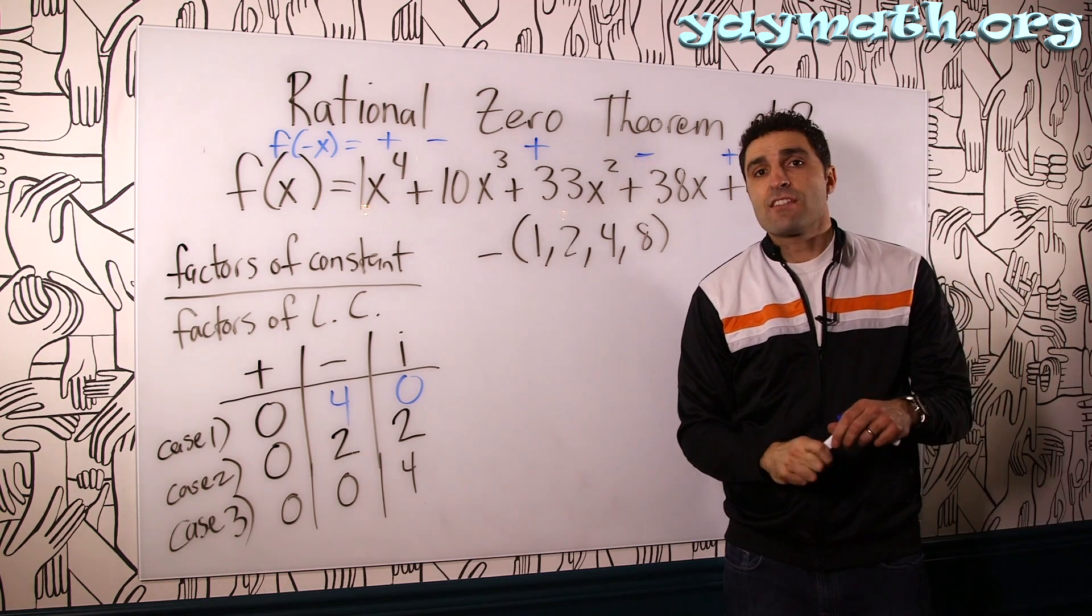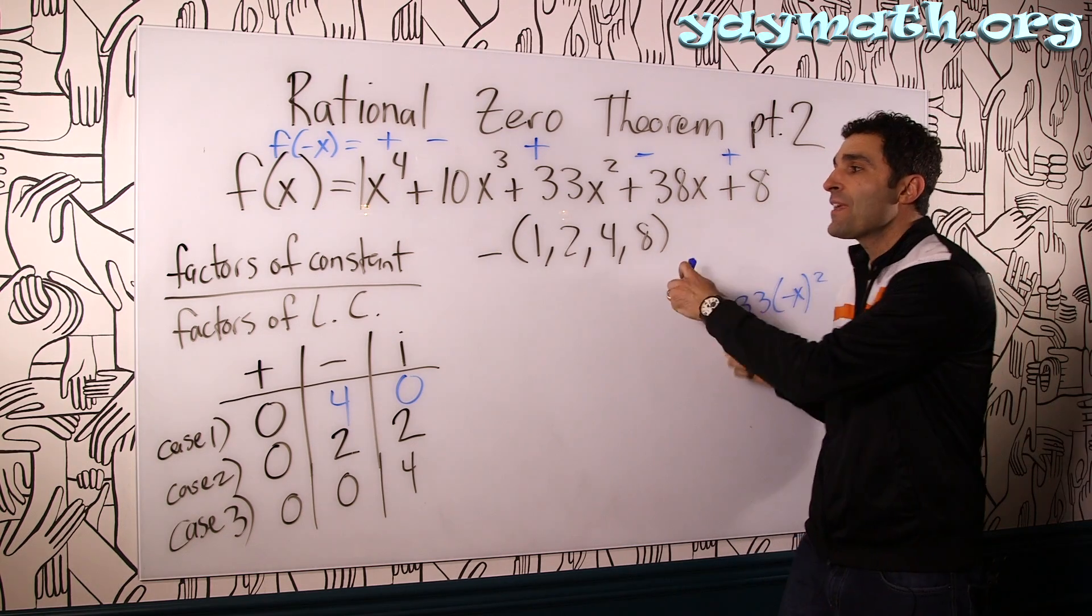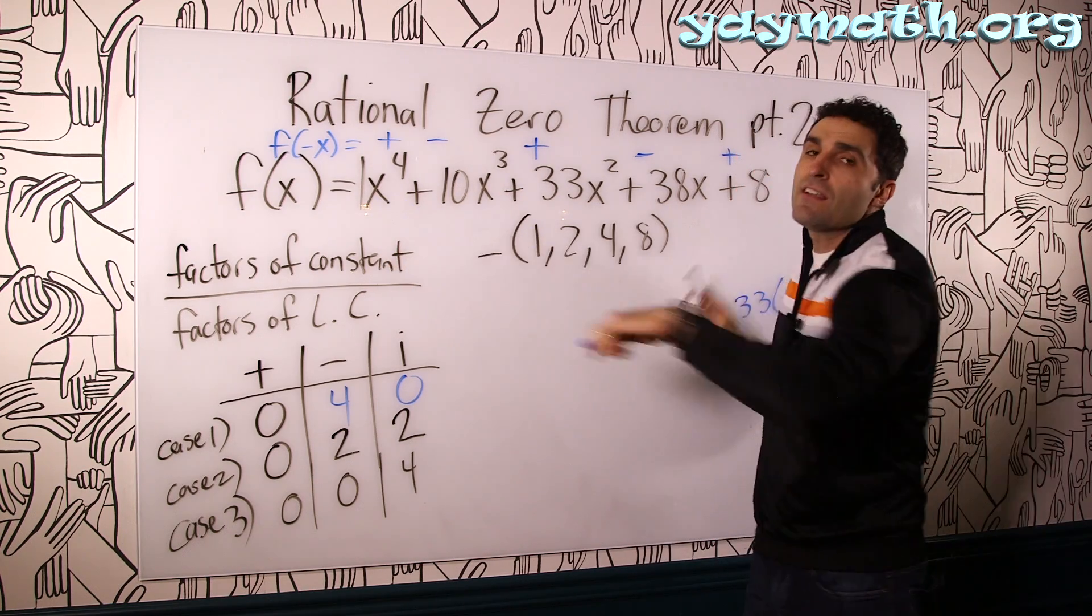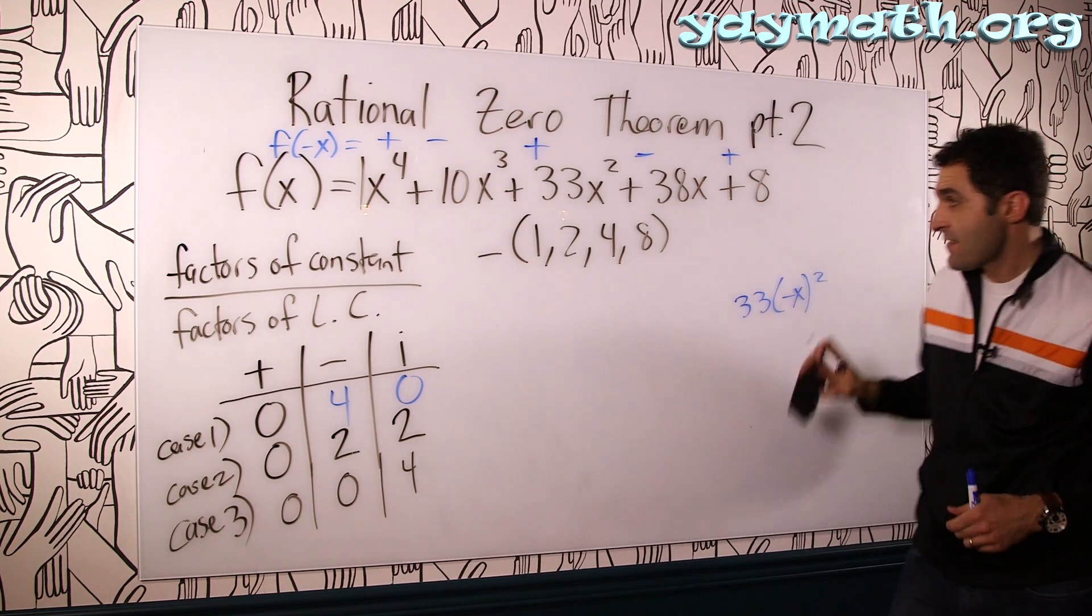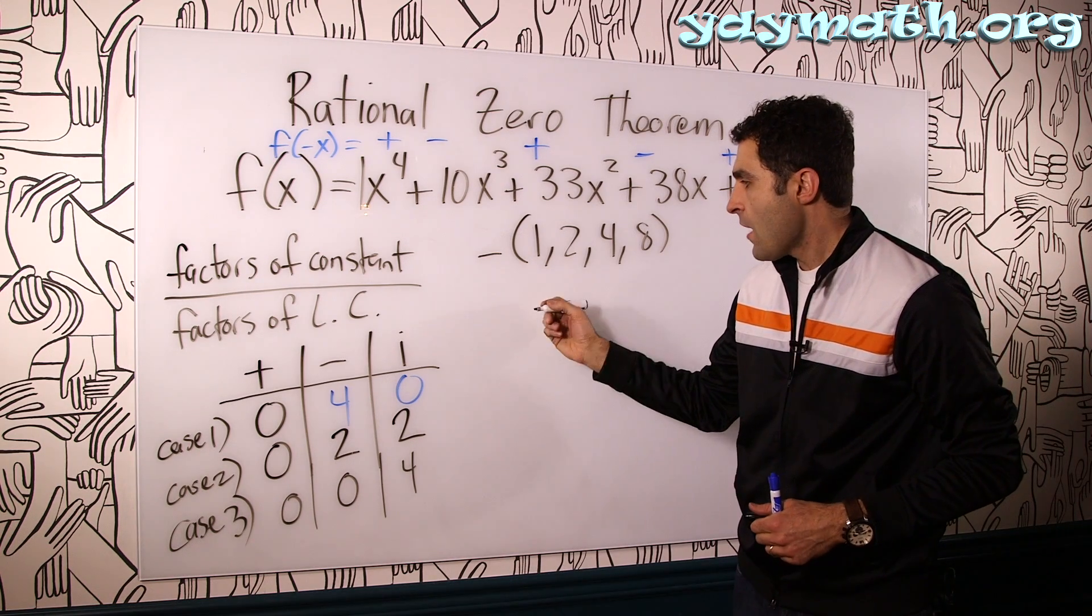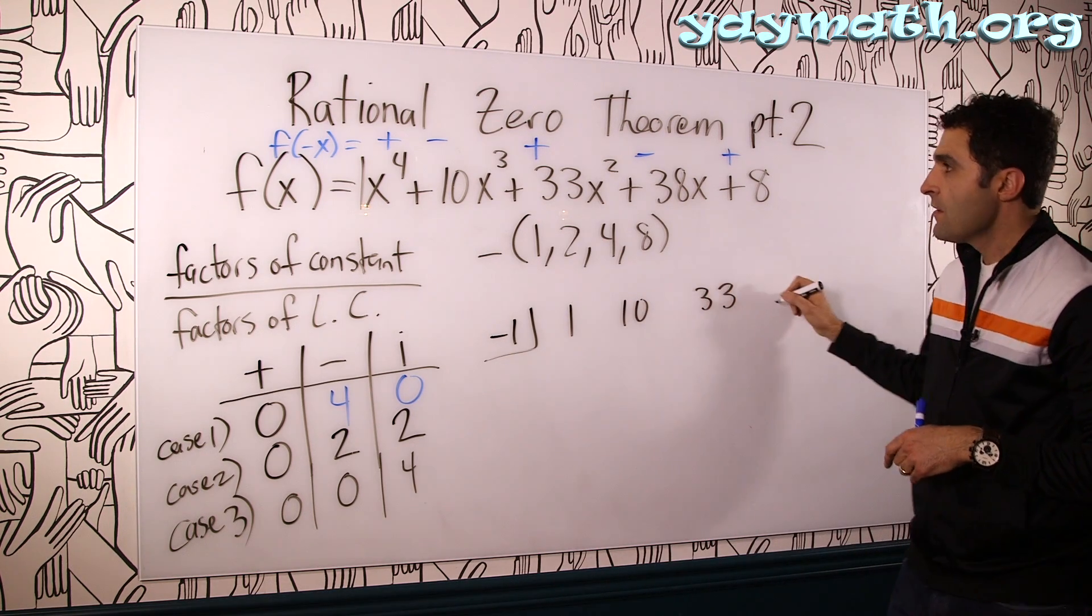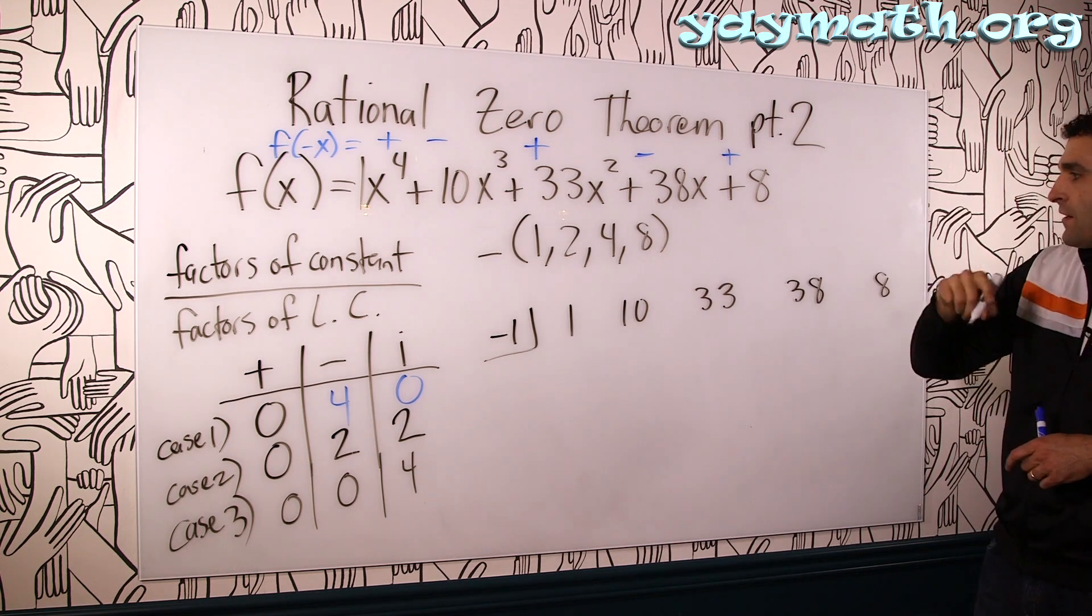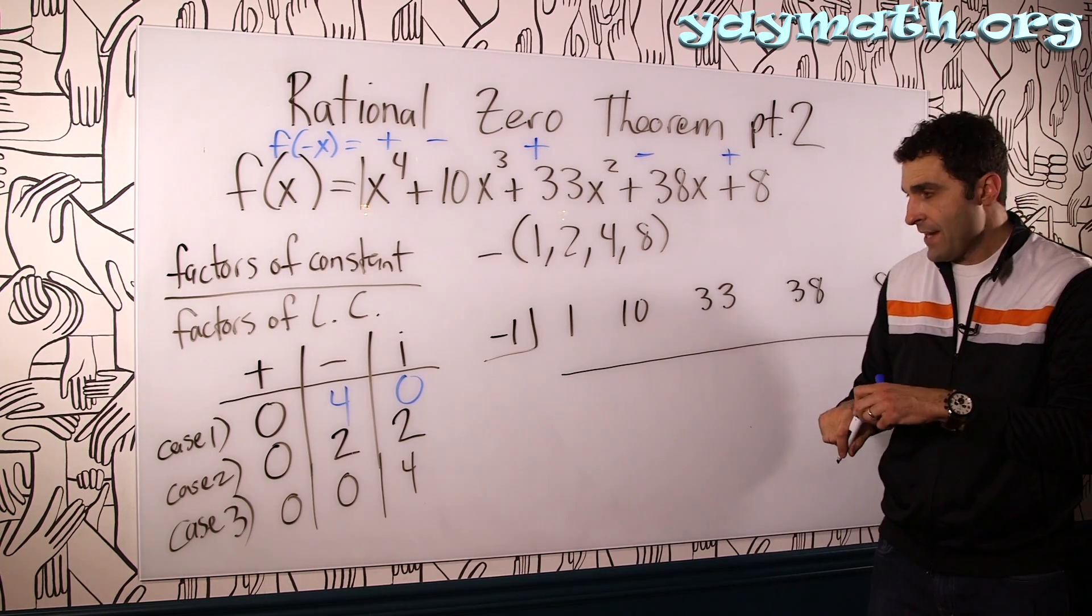So as far as the candidate roots go, eight candidates just reduced to four. Negative one, negative two, negative four, negative eight. Now we can synthetically divide only those to try to depress this polynomial down to uncover its solutions. Let's go through systematically and synthetically divide negative one in there. See if it divides evenly. All right, negative one. And one, 10, 33, one, 10, 33, 38, and eight. Five terms in there. There they are. All right. If it divides evenly, the remainder will be zero. Let's find out. Drop it. Multiply. Add.